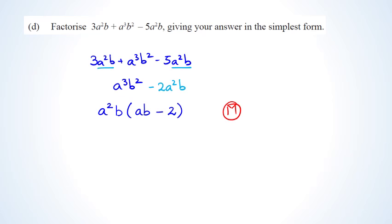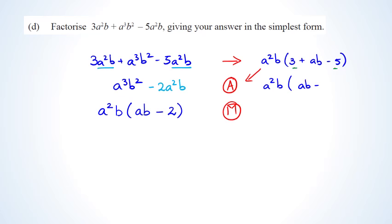If you left your answer at the step before factorizing, you're looking at an achieved. Some people factorize only the first line as a squared b times (3 + ab − 5), which is not fully simplified and also only gets achieved. However, since 3 minus 5 is negative 2, you can take it one more step to get a squared b times (ab minus 2), which gives a merit and is the same final answer.